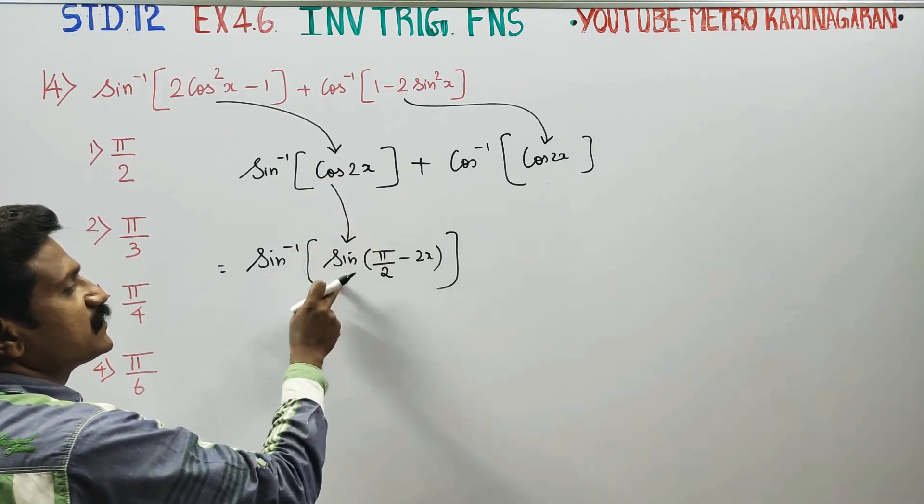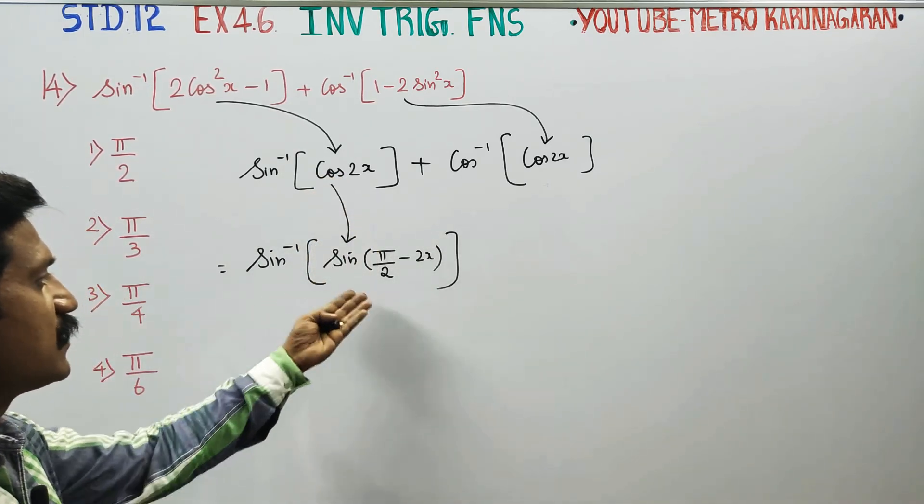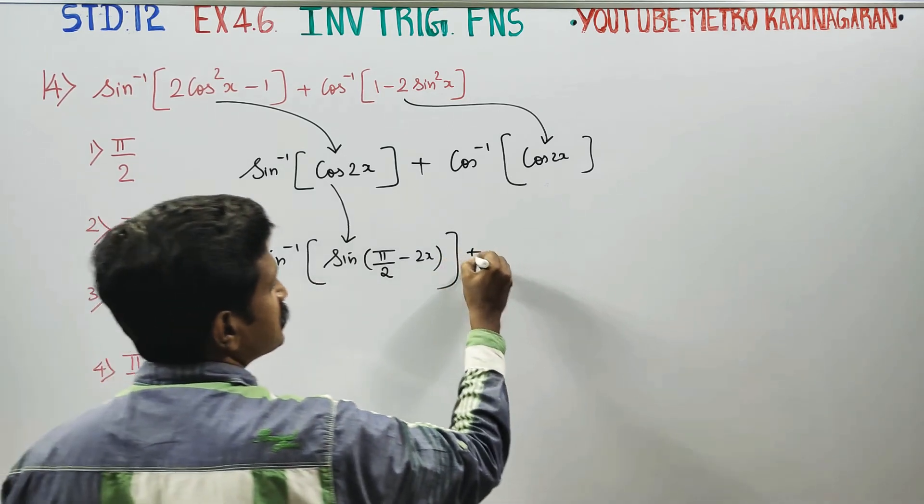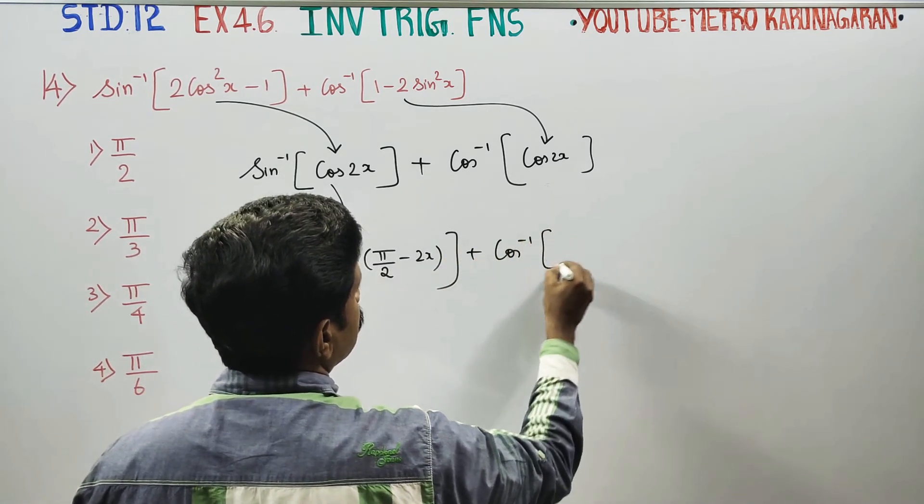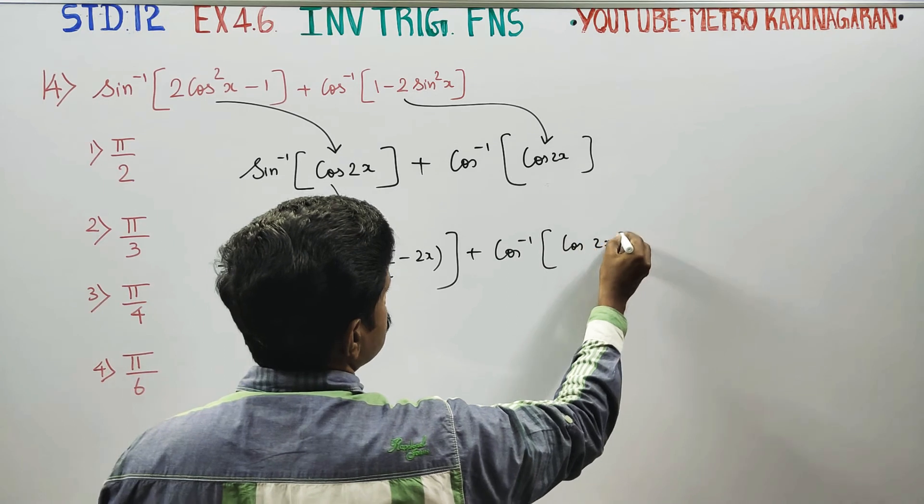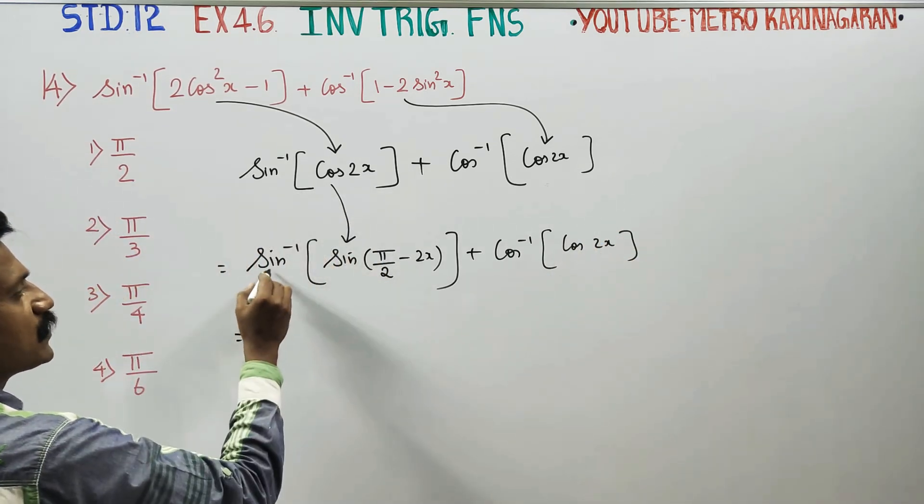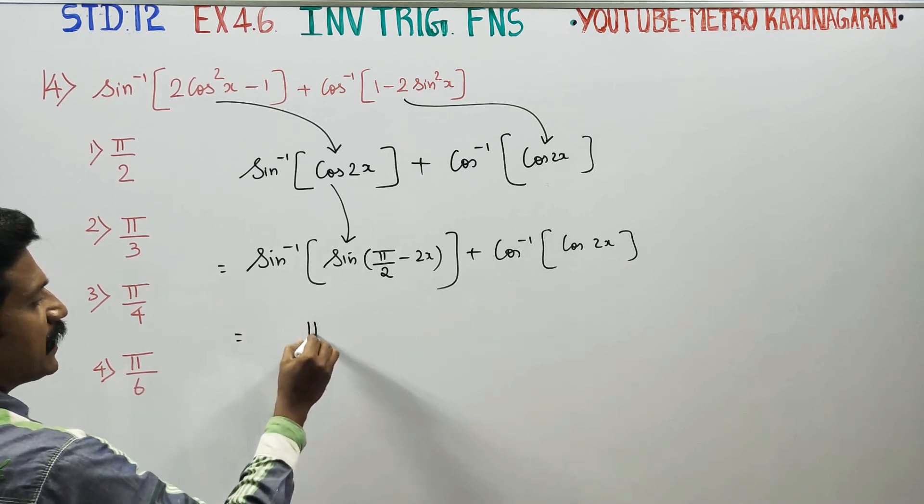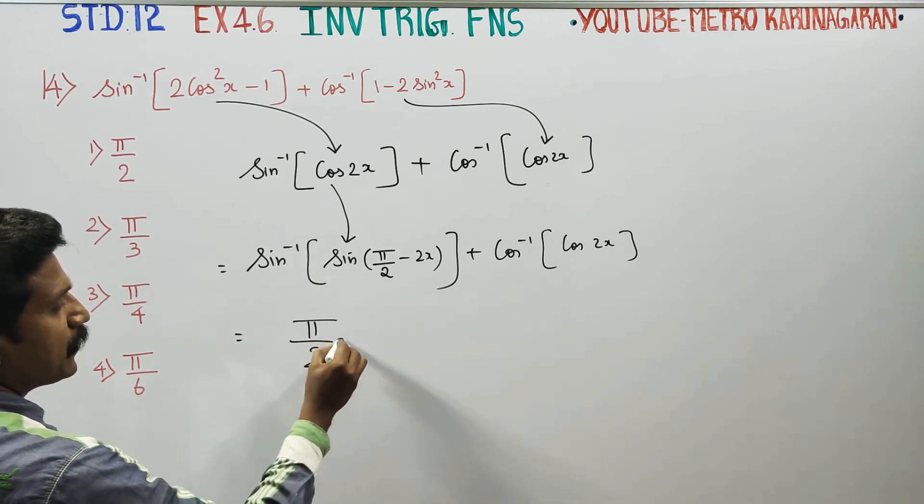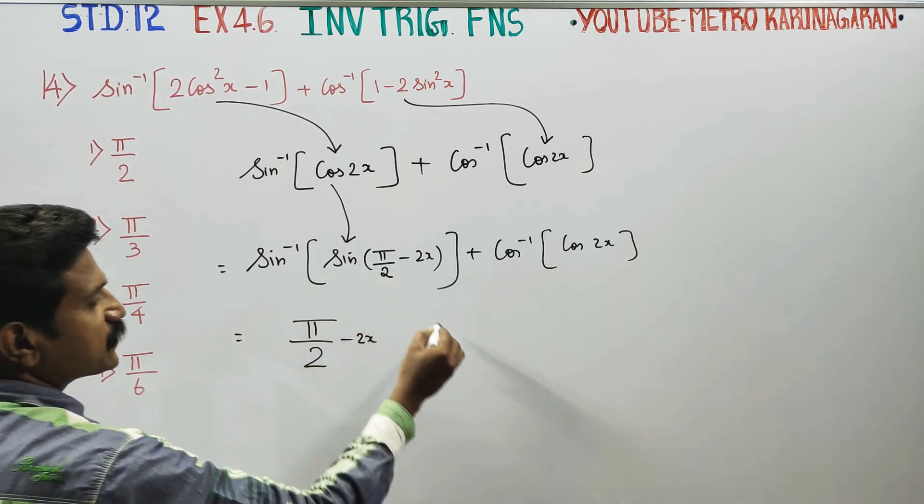Sin inverse of sin cancels, leaving π/2 minus 2x.